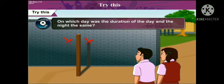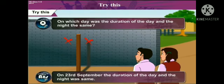Second: On which day was the duration of the day and the night the same? Answer: On 23rd September, the duration of the day and the night was the same.